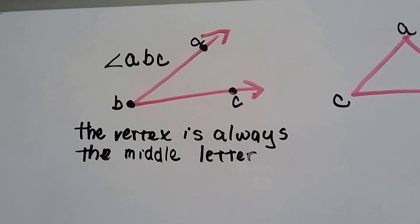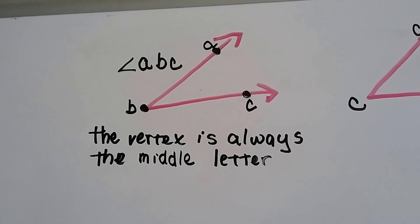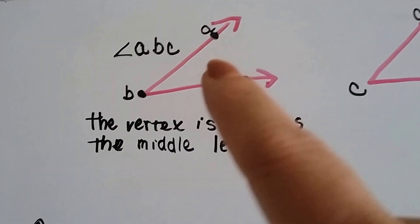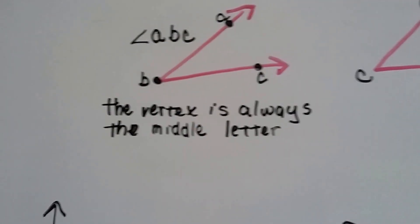See this angle here? The vertex is always the middle letter, so this is angle ABC. We've got A, B, and C, and this is the vertex, so it's the middle letter B.